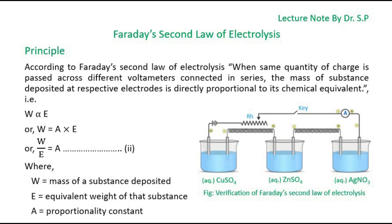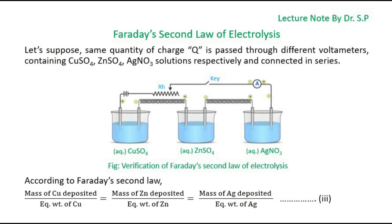That means W is directly proportional to E, or W is equal to A times E, or W divided by E is equal to A, where W is the mass of substance deposited, E is the equivalent weight of that substance, and A is the proportionality constant.